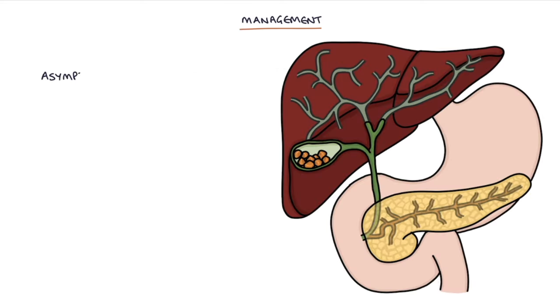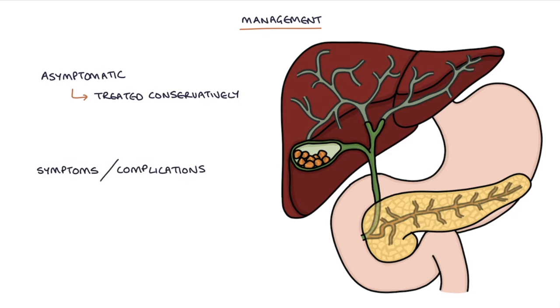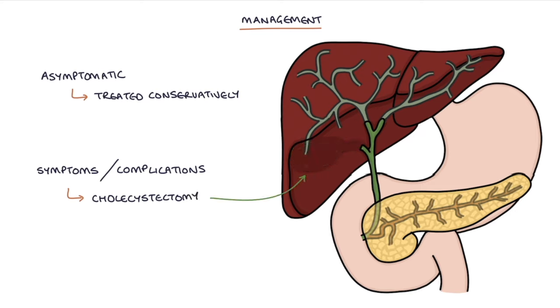Let's talk about management. Patients who are asymptomatic but have gallstones may be treated conservatively with no interventions. Patients with symptoms or complications of gallstones are treated with a cholecystectomy — the surgical removal of the gallbladder — provided that they're fit for surgery.